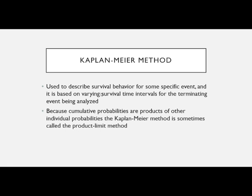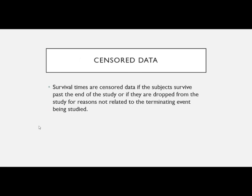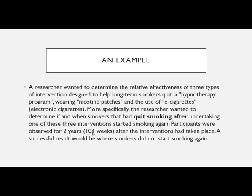The Kaplan-Meier method is used to describe survival behavior for some specific event, and it is based on varying survival time intervals for the terminating event being analyzed. Because cumulative probabilities are products of individual probabilities, it is sometimes called the product limit method. The ones who survived past the end of the study are censored. Survival times are censored data if subjects survive past the end of the study, or if they are dropped from the study for reasons not related to the terminating event being studied.